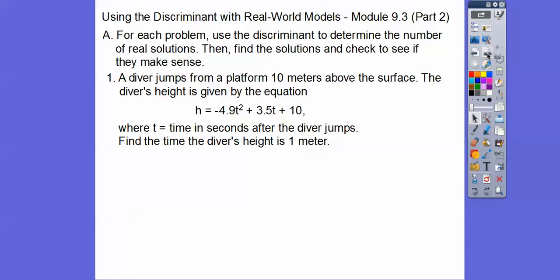So here's the first one. A diver jumps from a platform 10 meters above the surface, and the diver's height is given by this equation right there, where t is the time in seconds after the diver jumps. So find the time the diver's height is one meter high. So we're going to set this equal to one right here and then solve. Now it said in the directions up here, use the discriminant to find out how many real possible solutions there are. So I put it all on the left-hand side.